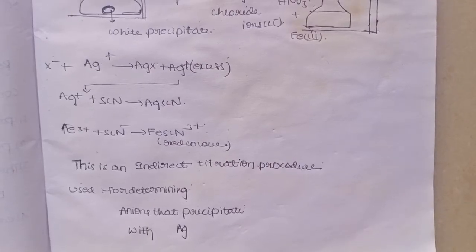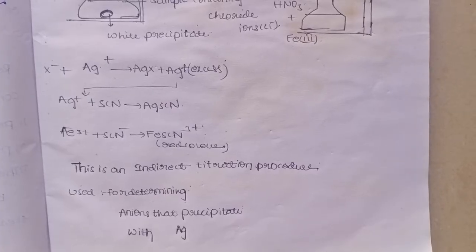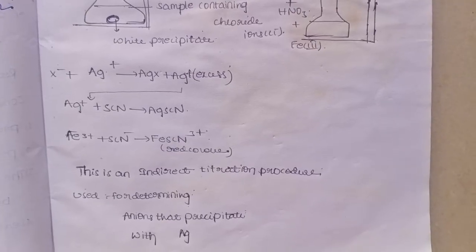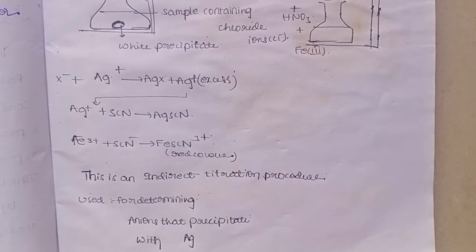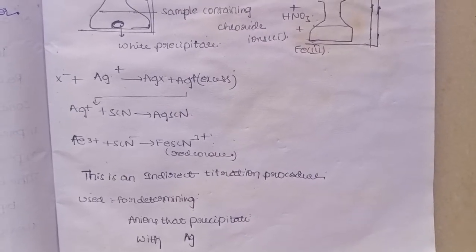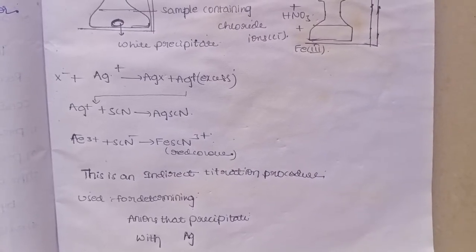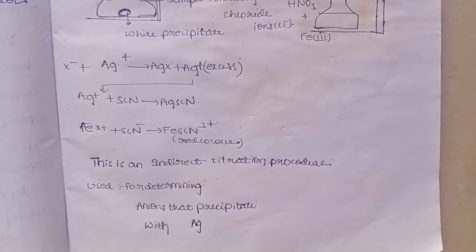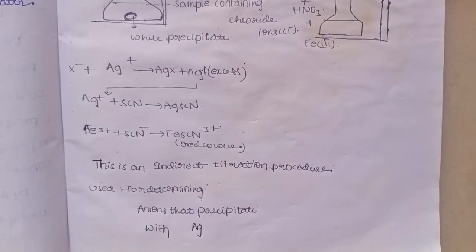This method is used for determining anions that precipitate with silver. Anions are negatively charged atoms — they have high capacity to pick up electrons — while cations are positively charged and give away electrons. Anions that react with silver form a precipitate, and Volhard's method is used to find their amount.